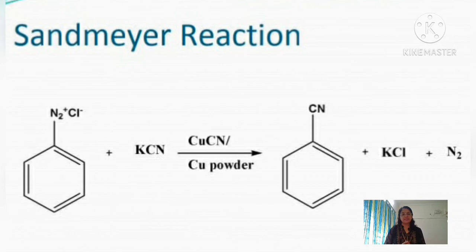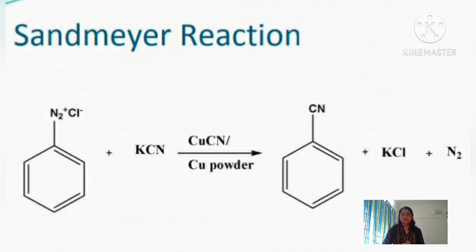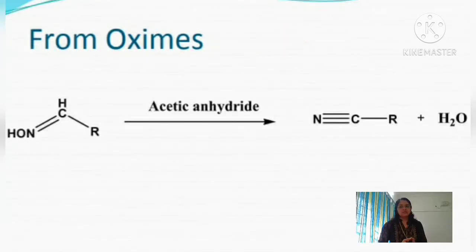Another method of preparation of cyanide compounds is by the modified Sandmeyer reaction — a best method for preparing aryl cyanides. First, the diazonium salt is prepared from aniline treated with nitrous acid at 0–5°C. The diazonium salt is then treated with potassium cyanide in the presence of CuCN (copper cyanide) or copper powder, giving benzonitrile with the elimination of nitrogen gas.